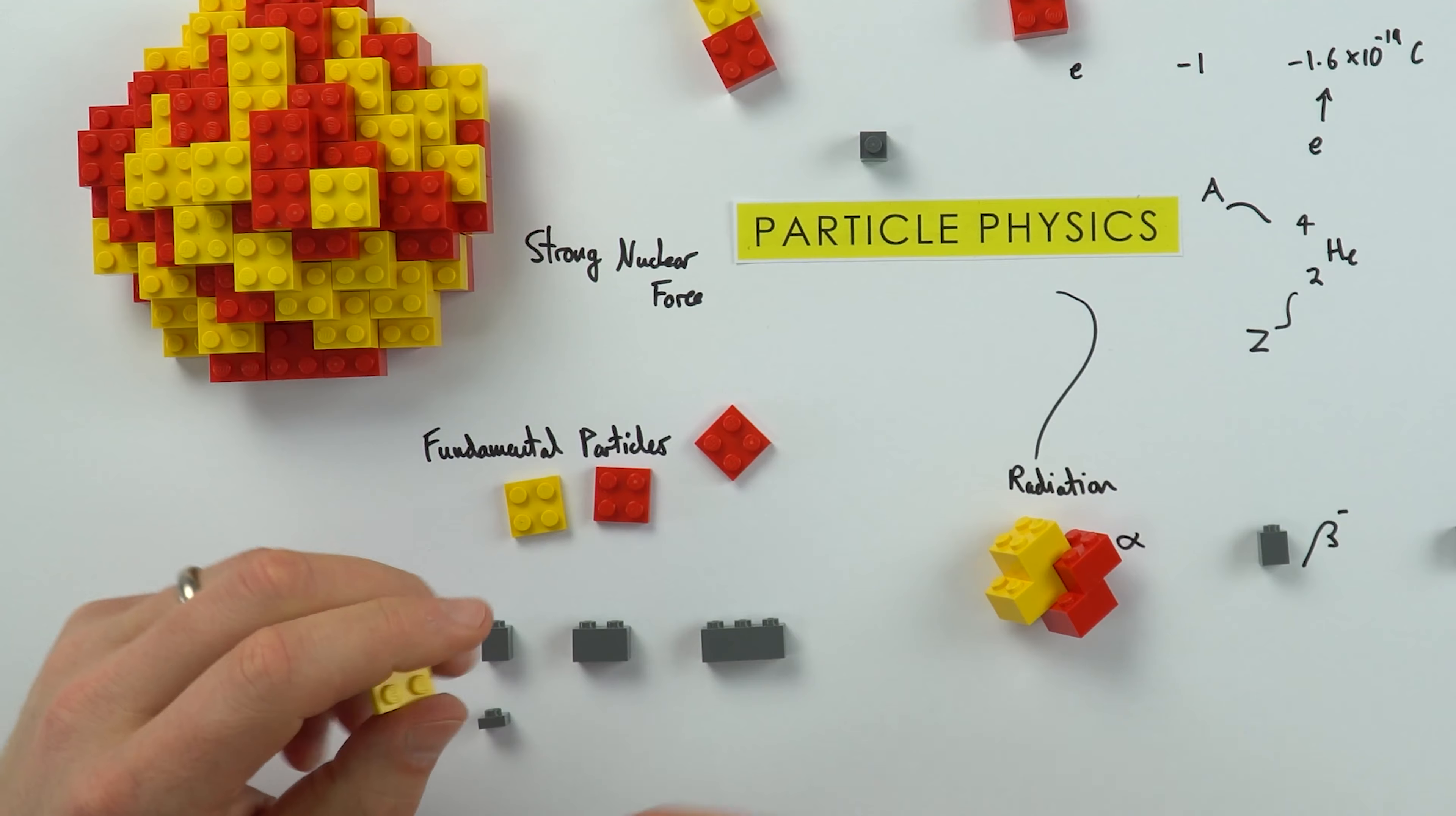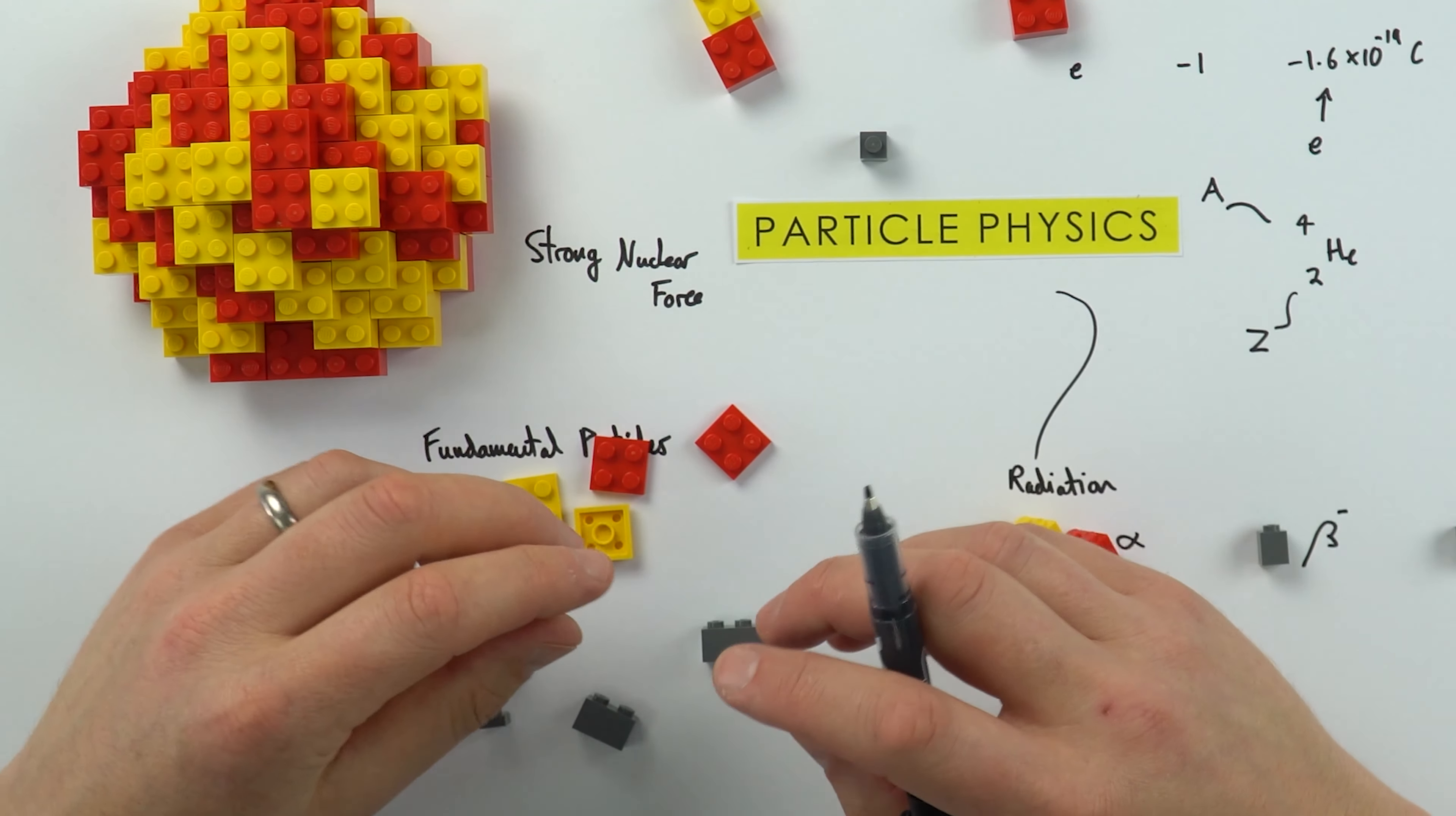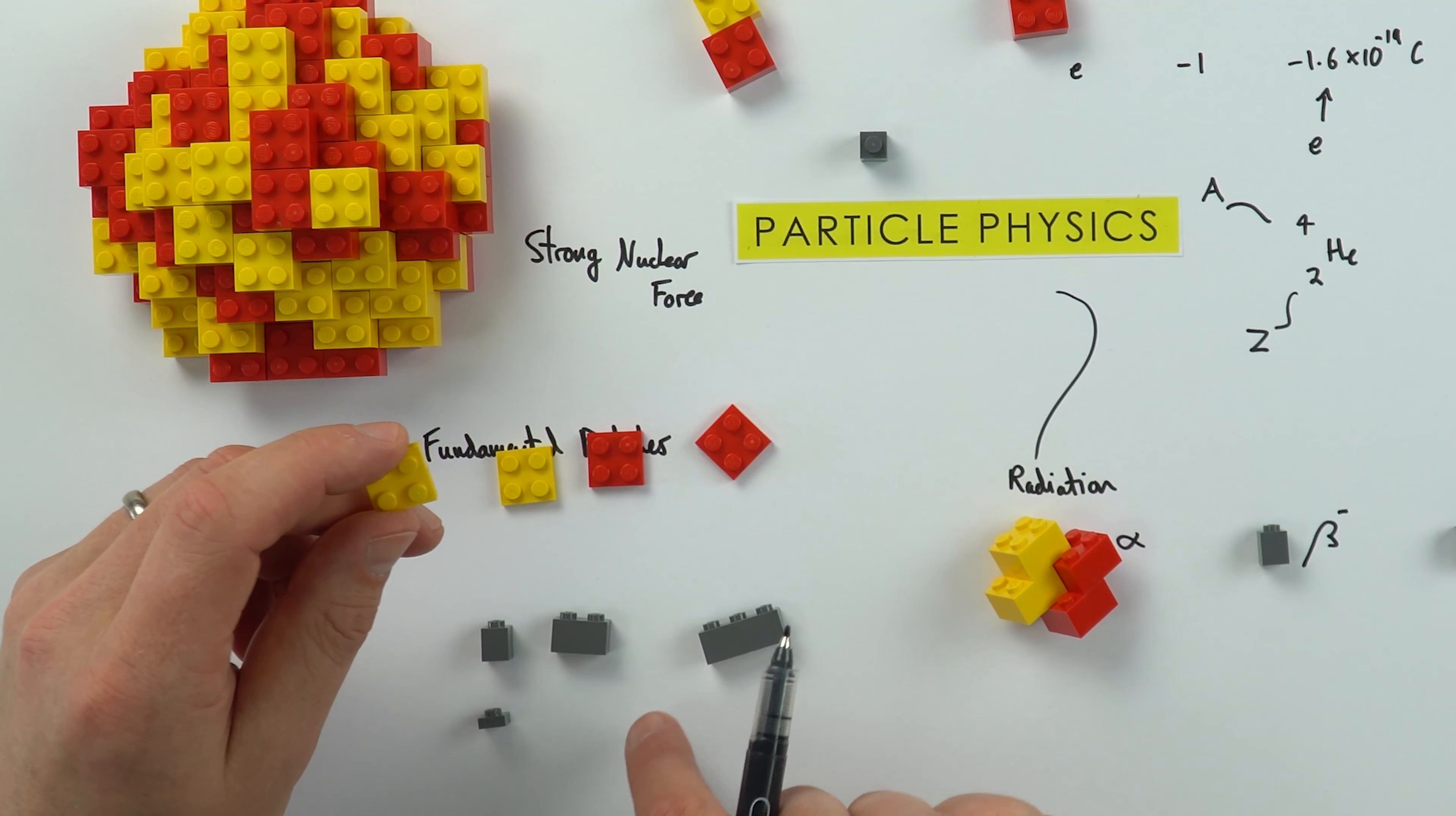This is basically a class of particles called hadrons. You might be familiar with the LHC over at CERN, we have the Large Hadron Collider. And hadrons are particles which are made out of quarks. Sometimes they're called quarks, I prefer the name quarks. These ones over here, the electrons and so, these are actually what we call leptons.